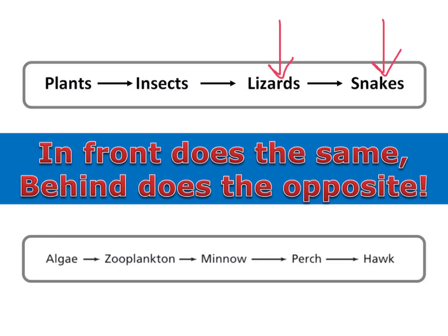But behind the lizards are the insects. Since they're behind, they would do the opposite — their population would increase. That makes sense: if there are fewer lizards, fewer insects are getting eaten, so more of them survive, causing an increase in the population.